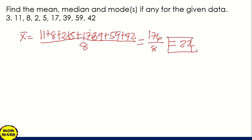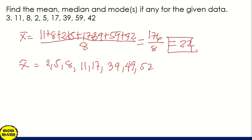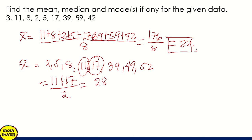Next is the median. For the median, we need to arrange the data from lowest to highest: 2, 5, 8, 11, 17, 39, 49, 52. Our rule is that if we have an even number of data, we have 2 middle values, and we add those 2 middle values and divide by 2. So 11 plus 17 divided by 2 gives us 28 divided by 2, which is 14. So 14 is the median.